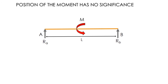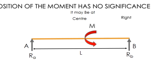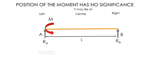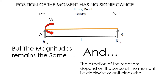The position of the moment has no significance. The moment may be at the center, at the right, or at the left — the position makes no difference to the magnitude of the reactions. The only thing that changes is the direction of the reactions, which depends on the sense of the moment.